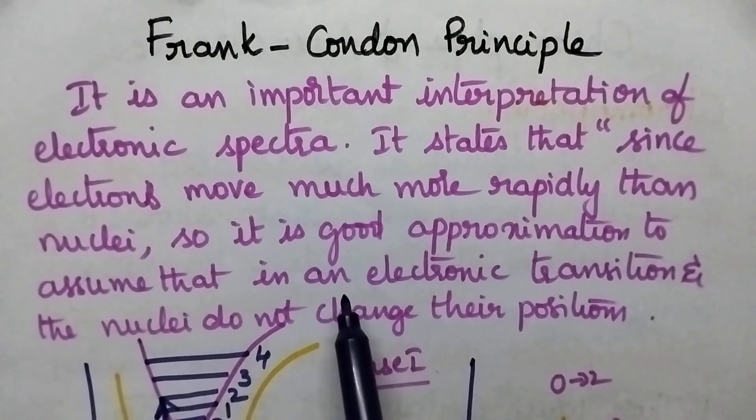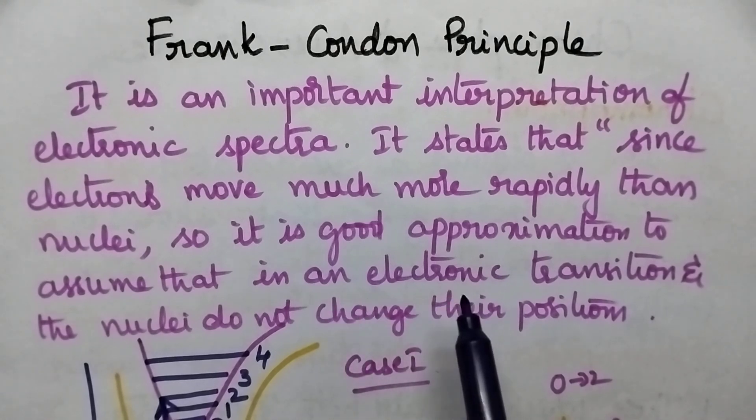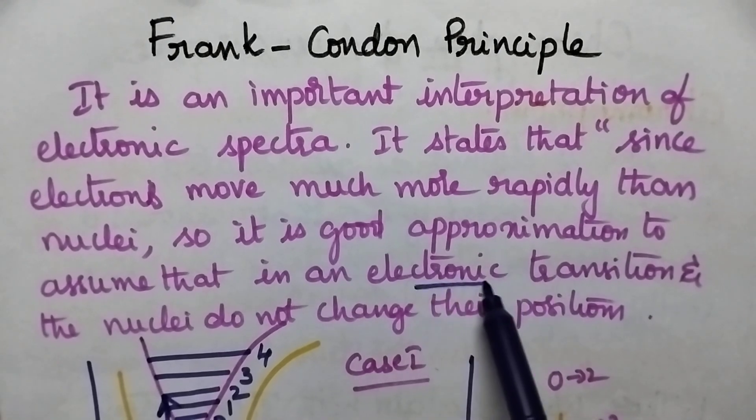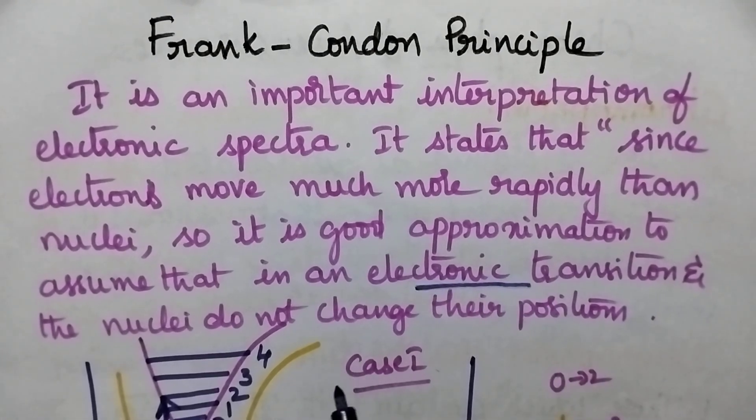When a molecule is exposed to UV radiation, only electrons show a transition. This means we observe electronic transitions, but there is no movement in the nuclei.